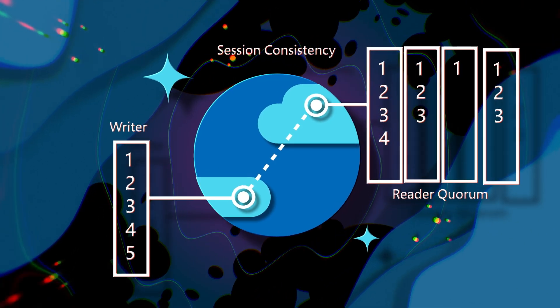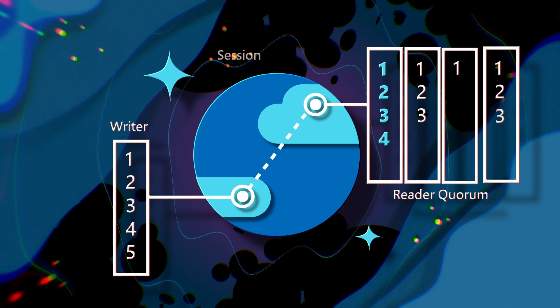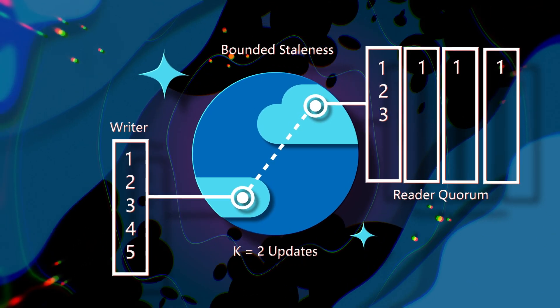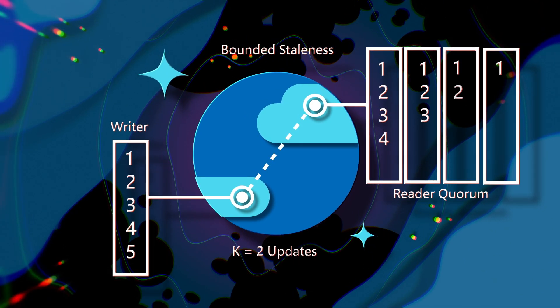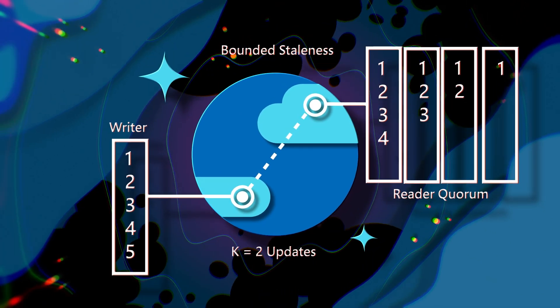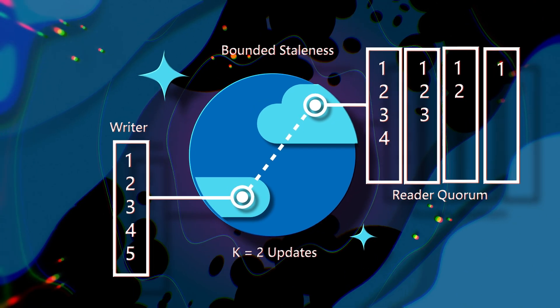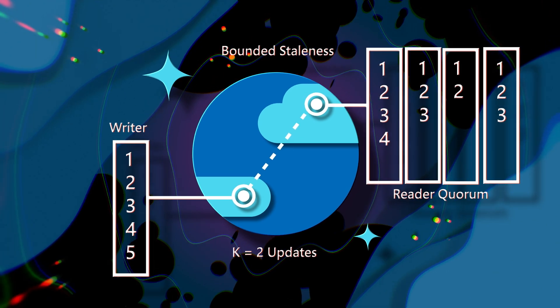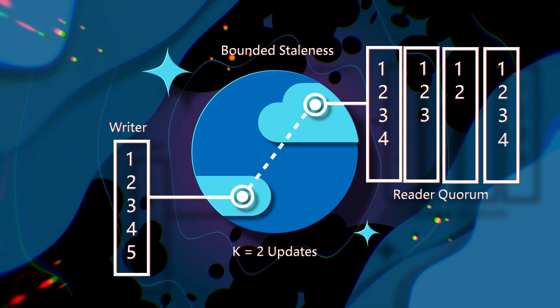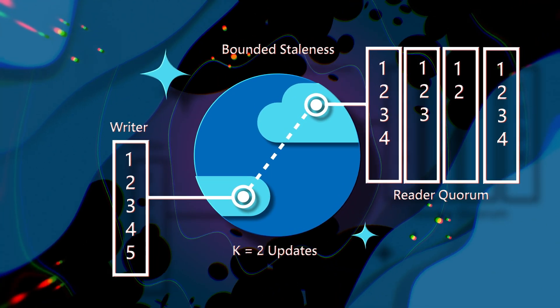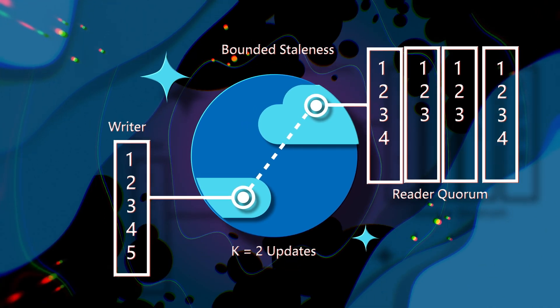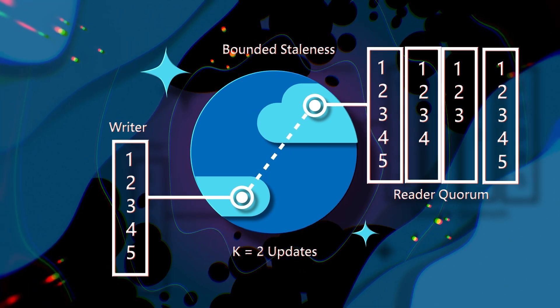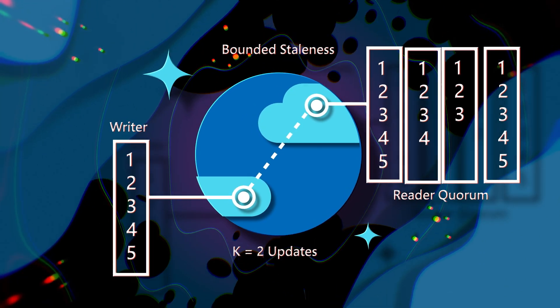With bounded staleness, we define a staleness window in which the reads are guaranteed to honor the consistent prefix and can only be X number of updates or T amount of time behind the most recent write. Within that window, writes within a single region are strong consistent, and writes from a different region are consistent prefix, so guaranteed to be done in order. Approaching the upper limit of that staleness window, writes will be throttled so that replication can catch up, resulting in low write latency and high throughput most of the time.